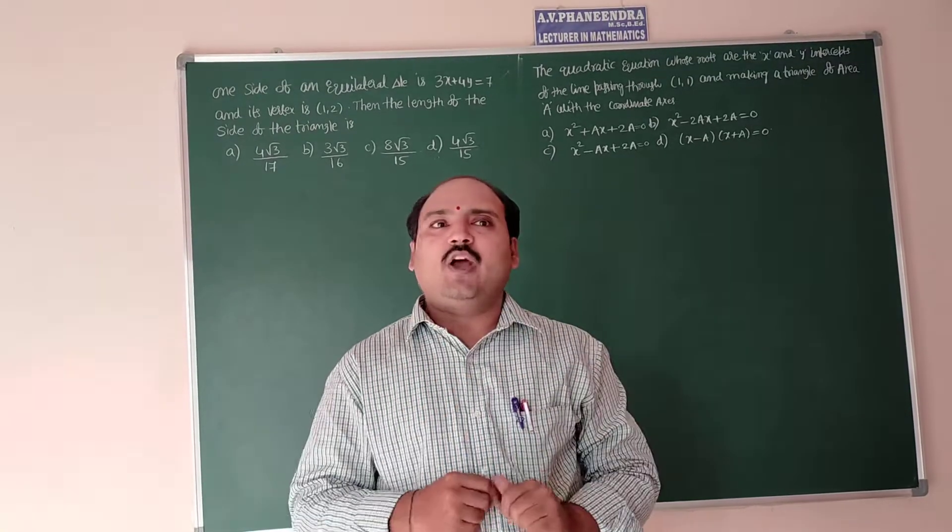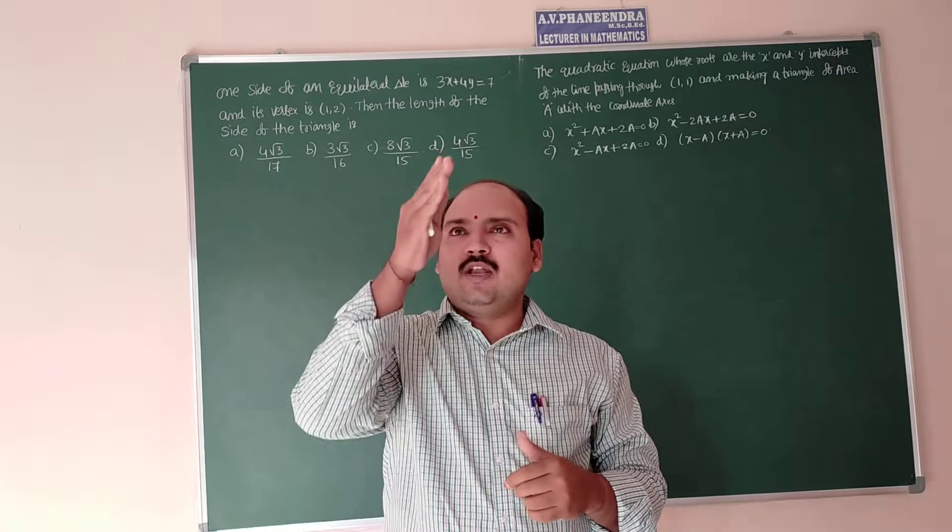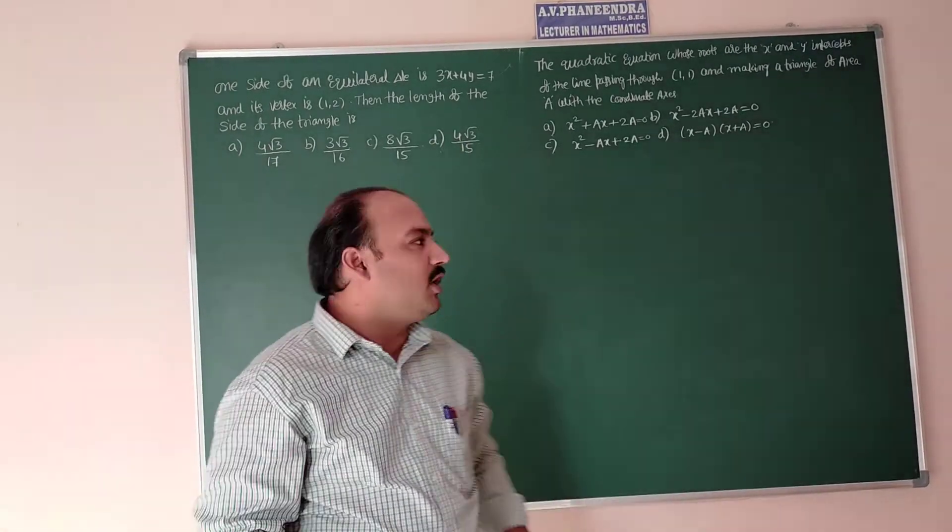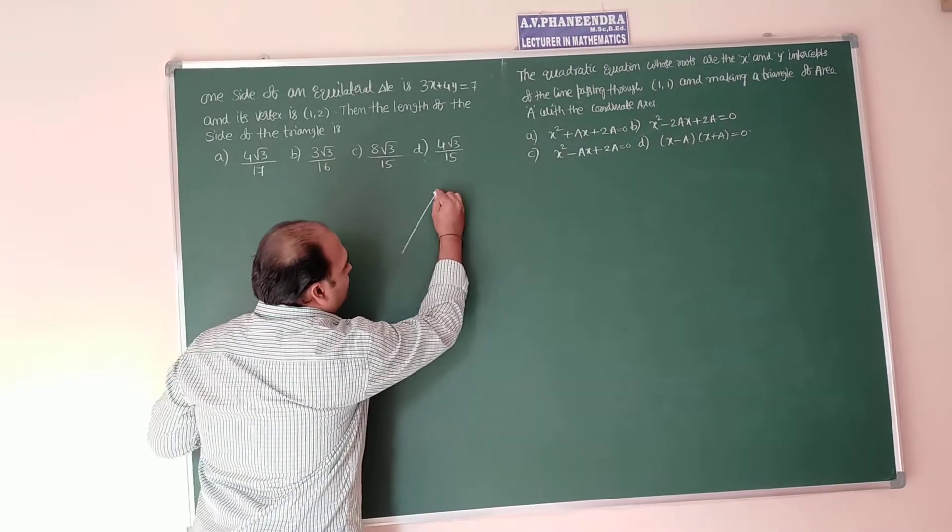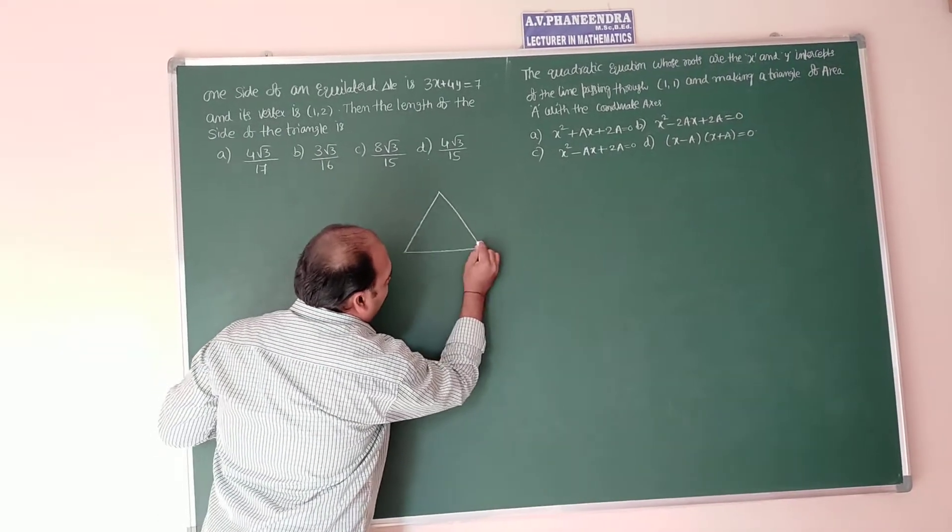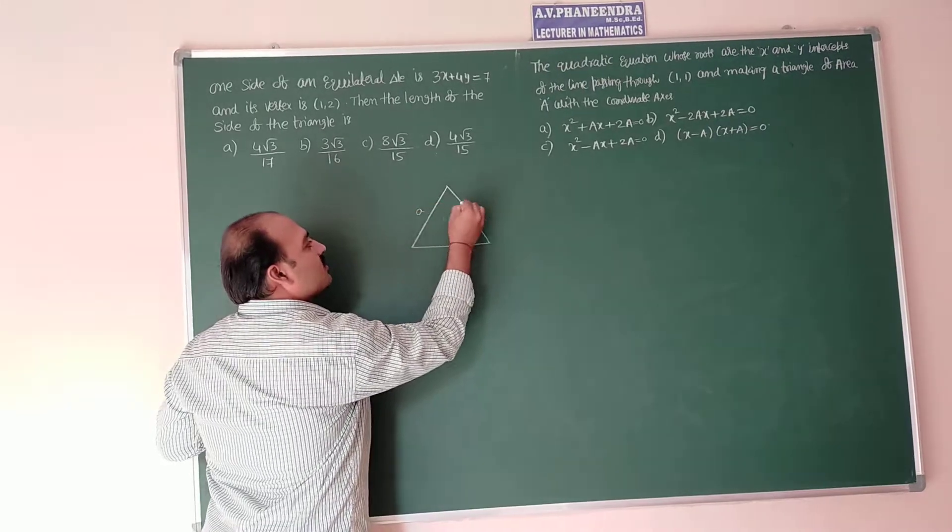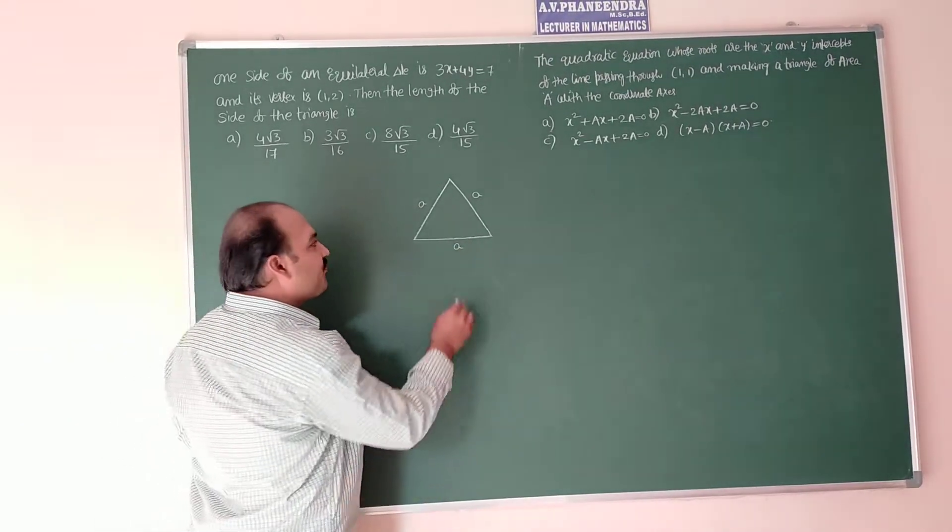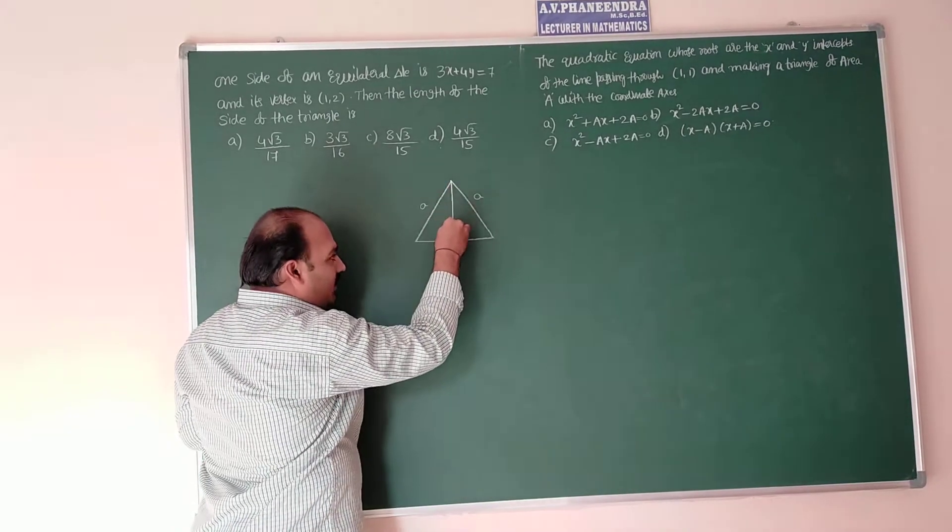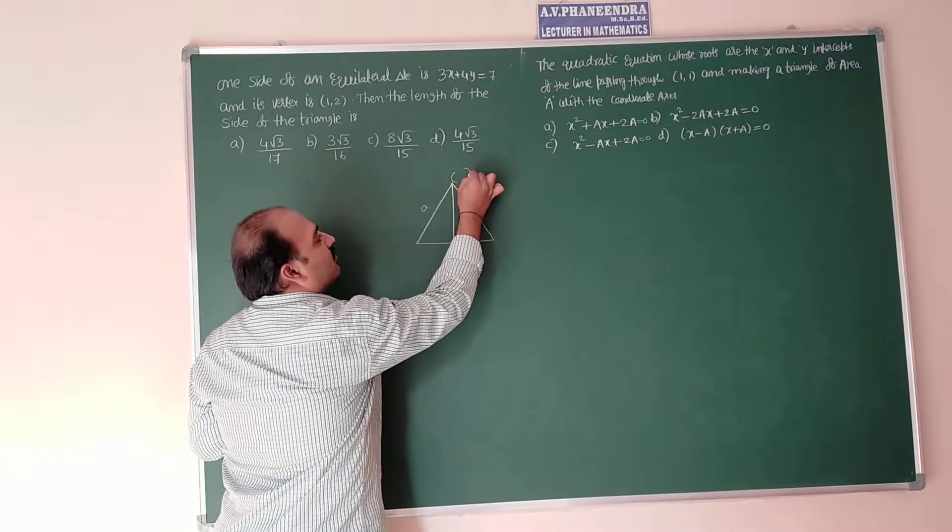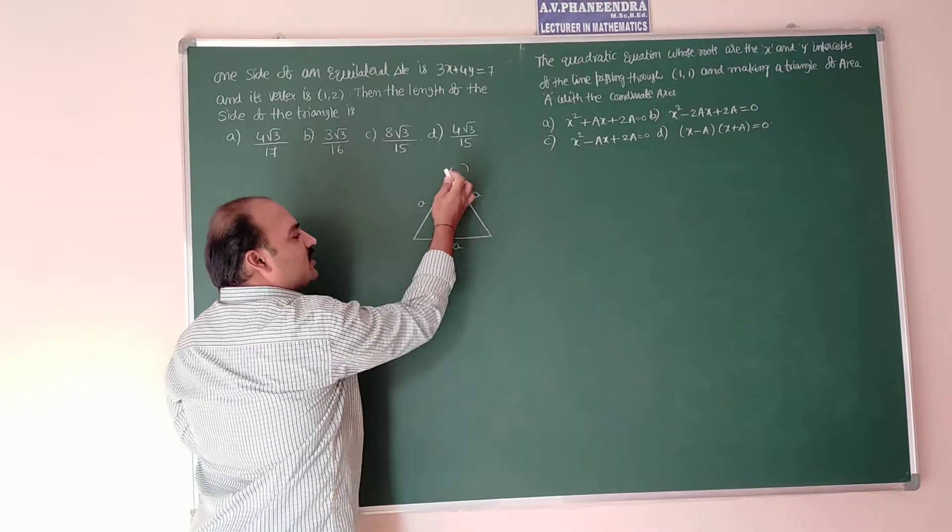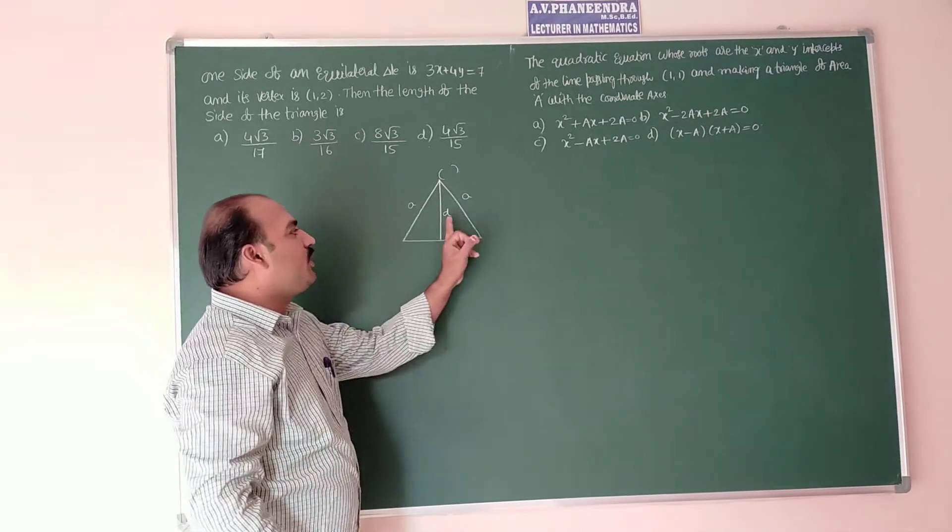Equilateral triangle and D is length of perpendicular from one vertex to one side. Observe the diagram here, this is an equilateral triangle whose length of the sides we are assuming is A units, and the length of perpendicular from one vertex to one side is equal to D units.